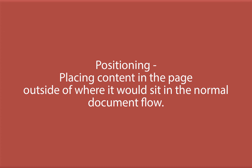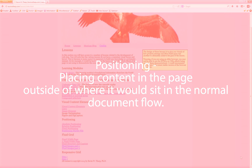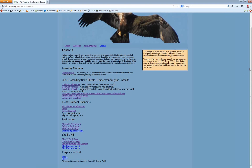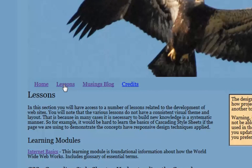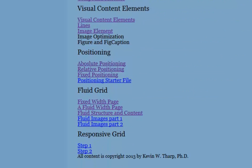What we're going to do now is take a look at some positioning. Positioning is a way of moving items from their normal location in the document object model and placing them in different places on the page. I've come into the kevinwtharp.com site and gone to the lessons section, and we're going to be working with this document.